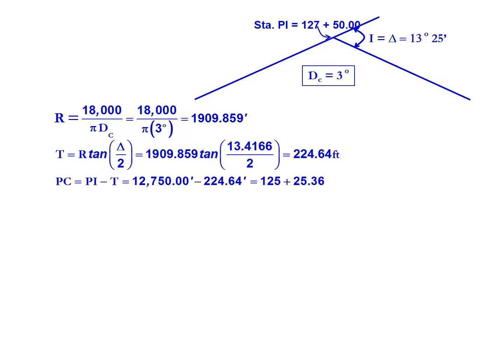We can now calculate our point of curvature station. We're going to start with our PI and subtract off our tangent length. So our PI of 127 plus 50, we're going to subtract off the 224.64 feet, gives us a PC station of 125 plus 25.36.